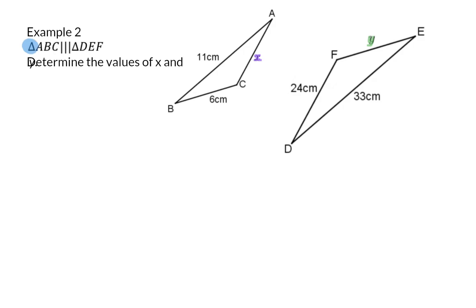In this case, we are given that the two triangles are similar. Therefore, we can determine which side lengths form the same proportion. Side AB and DE will have the same ratio as side BC and EF, and also the same ratio as side AC and DF.